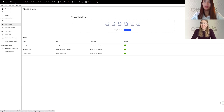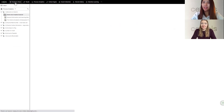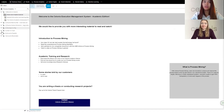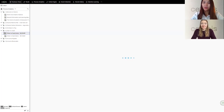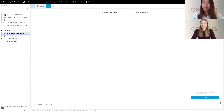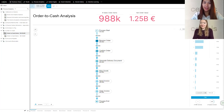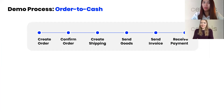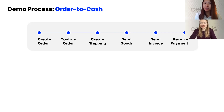The data uploaded includes three tables all around the order-to-cash process — a process that every one of us has gone through at some point. These three tables are connected together to build the data model, which is the very foundation for analysis. The order-to-cash process deals with everything from receiving a specific order for a product or service to sending the product out and receiving payment from the customer. In a typical process model, it starts with creating the order, confirming the order, creating the shipment, sending the goods, sending out the invoice, and finally receiving payment.